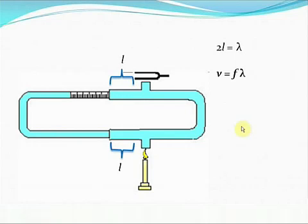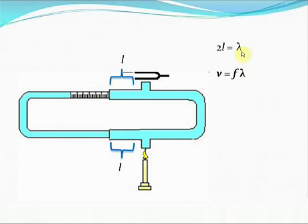We already know that V equals F times lambda, where V is the velocity of sound, F is the frequency of the tuning fork, and lambda, as we just found, equals 2l. This helps us determine the velocity of sound in the fluid. Isn't that simple? It is.